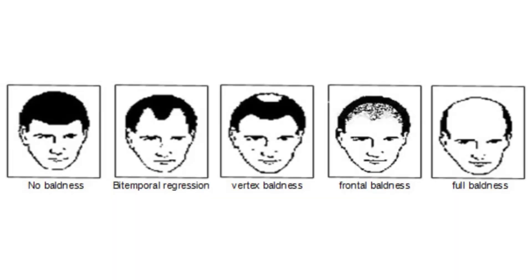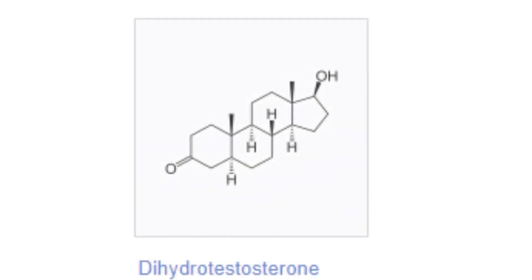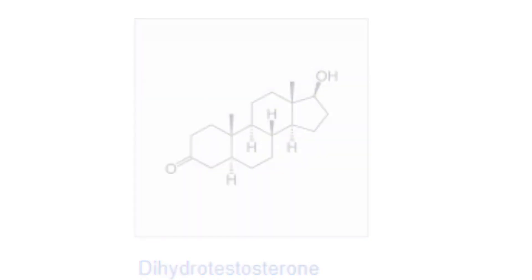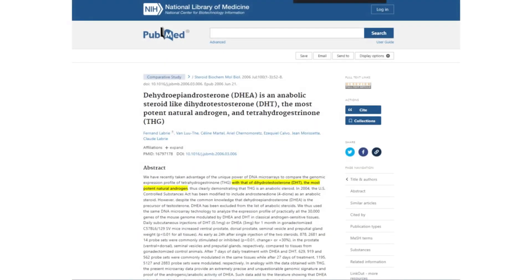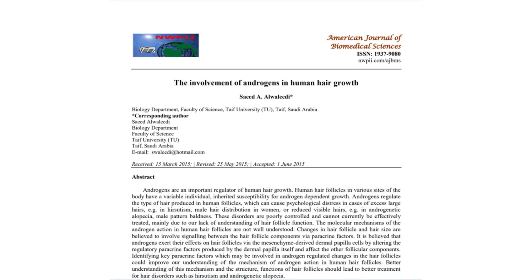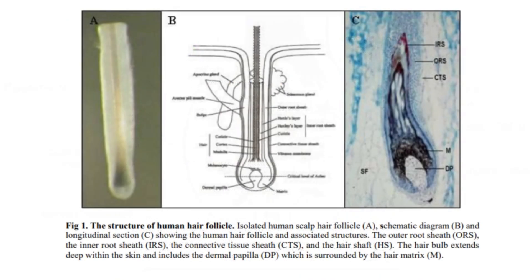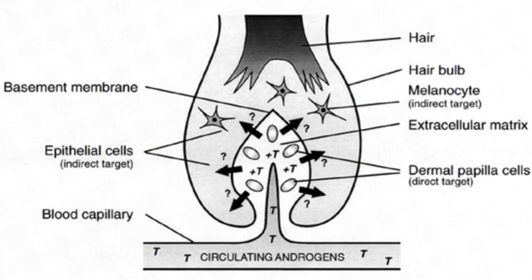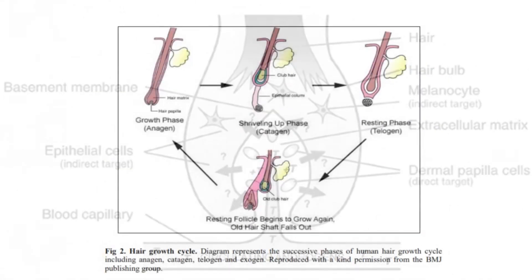Understanding androgenetic alopecia requires a deep dive into the molecular mechanisms at play. A significant culprit behind male pattern baldness is dihydrotestosterone, or DHT, an androgen that strongly binds to the androgen receptor. DHT is the most potent natural androgen. When DHT binds to receptors in hair follicles, it can induce follicular miniaturization, leading to hair thinning and eventual loss.